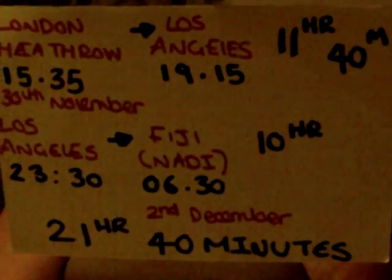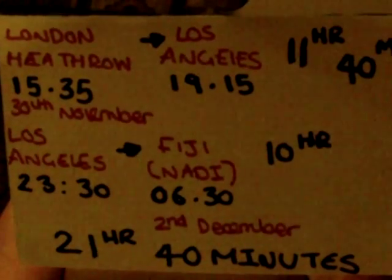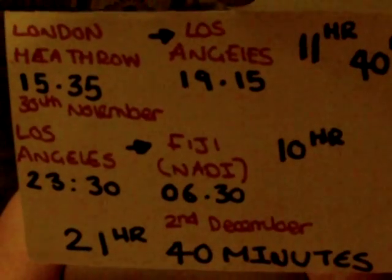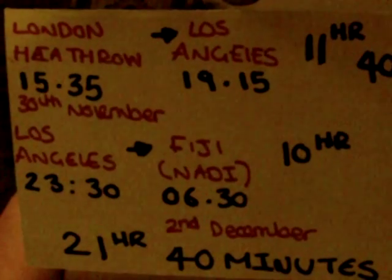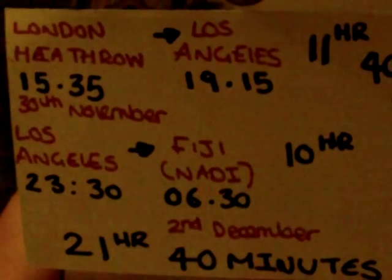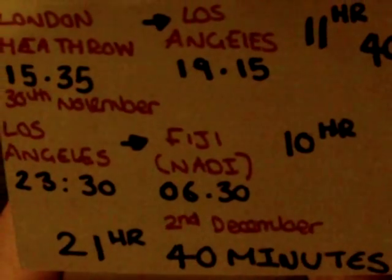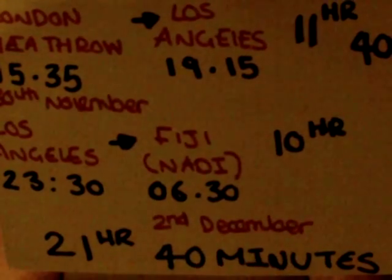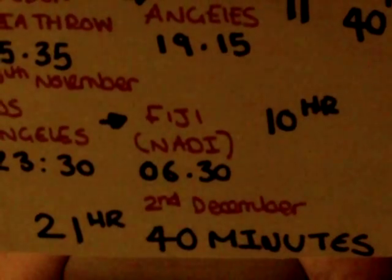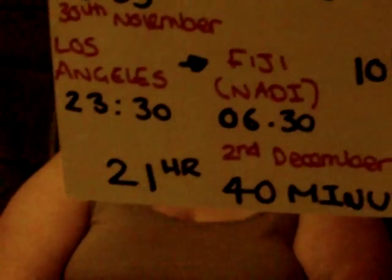The second flight will leave Los Angeles at 23:30 on Sunday 30th of November and will arrive into Fiji at 06:30 on Tuesday 2nd of December. The elapsed flying time for this flight is 10 hours, making the total elapsed flying time for both flights 21 hours and 40 minutes. Passengers must allow a 4 hour 15 minute transfer time in Los Angeles. This flight crossed the international date line and went through the Eastern Hemisphere.